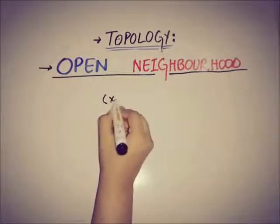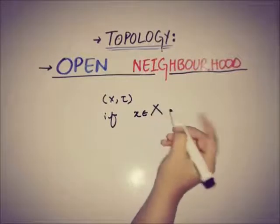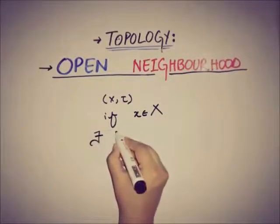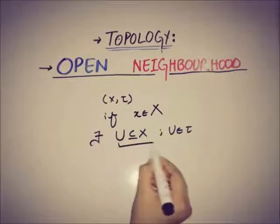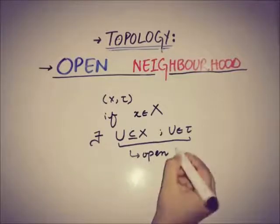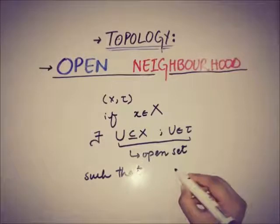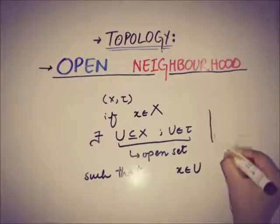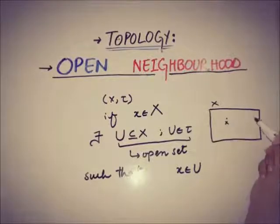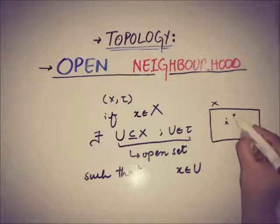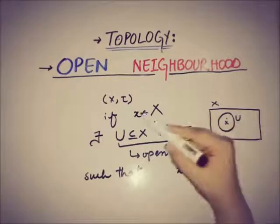If (x, tau) is a topological space and we pick any random element from the set x, then there exists a subset u of x that is also contained in that topology, which means that subset is open. This is an open set of x such that x is in u. If we have a set x and we pick a random element — let's say this is a point x — and there exists an open set u that contains that point x in the set x, then u is known as an open neighborhood of that point x.